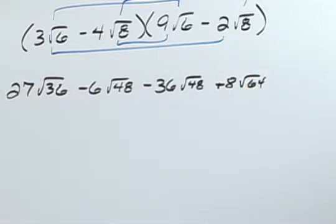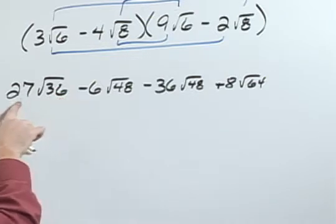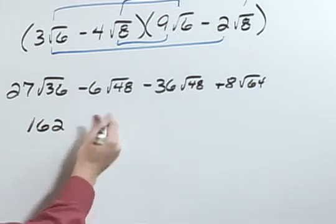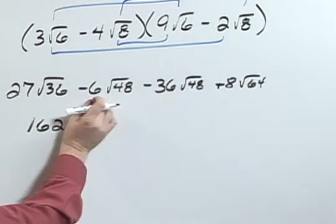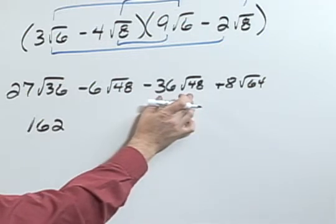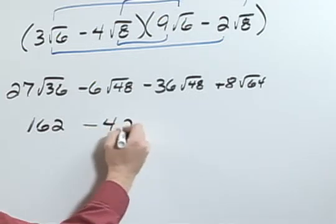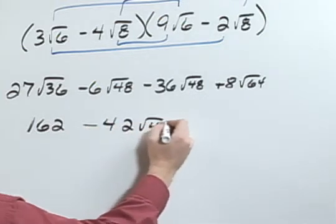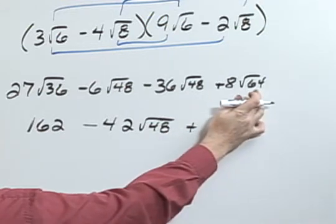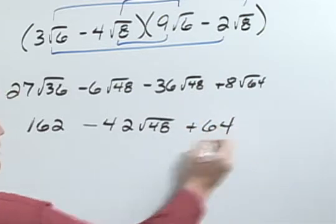Now let's simplify. The square root of 36 is 6, and so 6 times 27 would be 162. I can combine these. Negative 6 square root of 48 minus 36 square root of 48 is going to be negative 42 square root of 48. Plus the square root of 64 is going to be 8, so 8 times 8 would be 64.